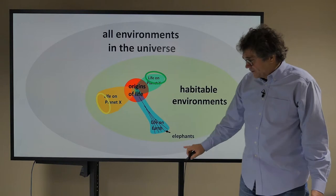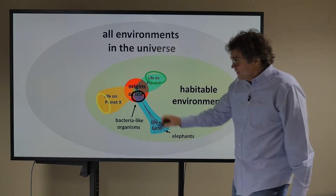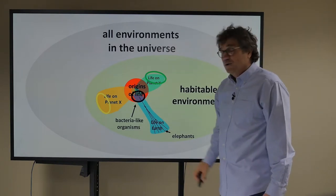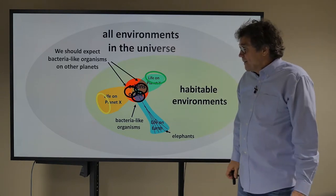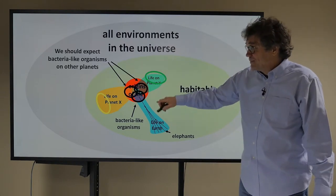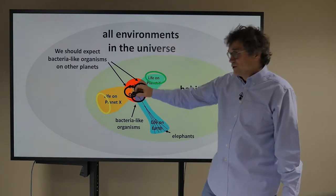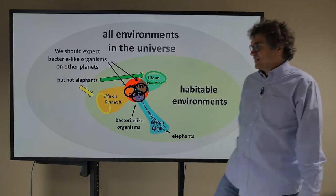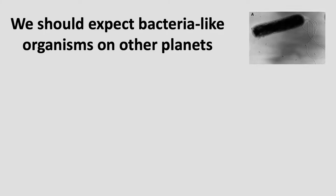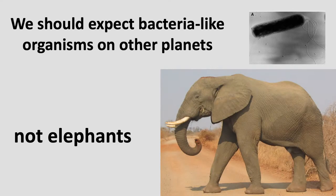So for example, here are elephants and here on Earth are the bacteria-like organisms that we think were at the origin of the tree of life. But we should expect bacteria-like organisms on other planets because the origins are shared but maybe not elephants. So graphically, we should expect bacteria-like organisms on other planets but not elephants. That seems to make some sense.